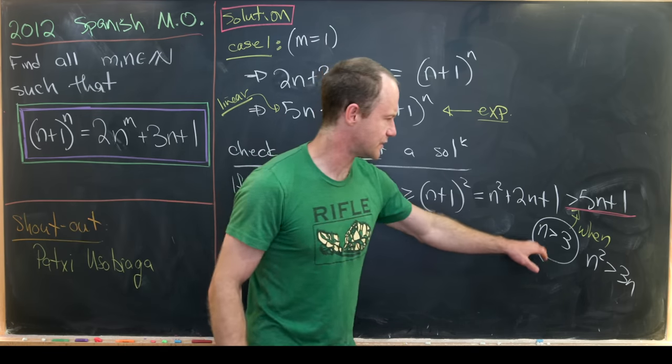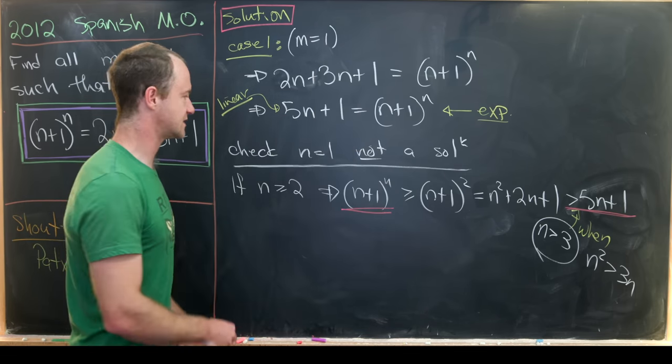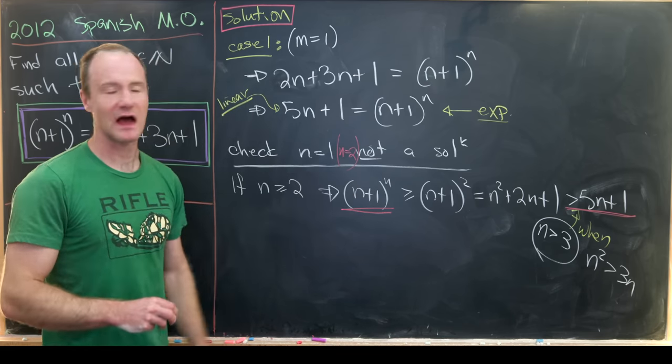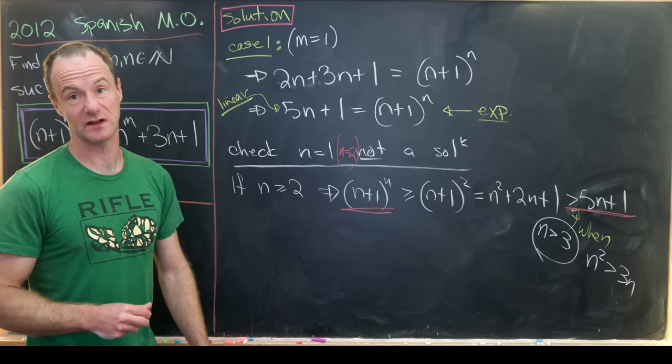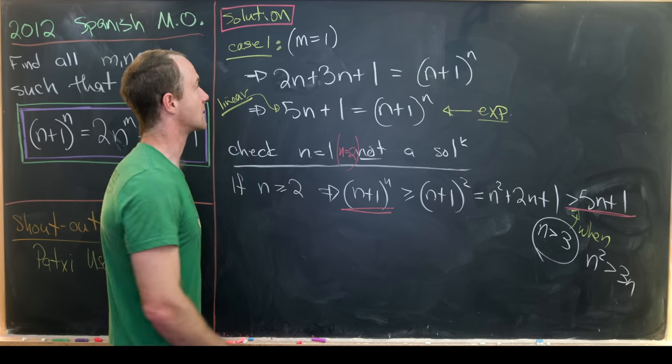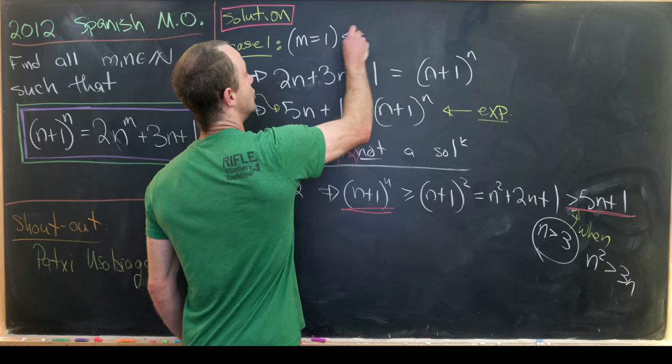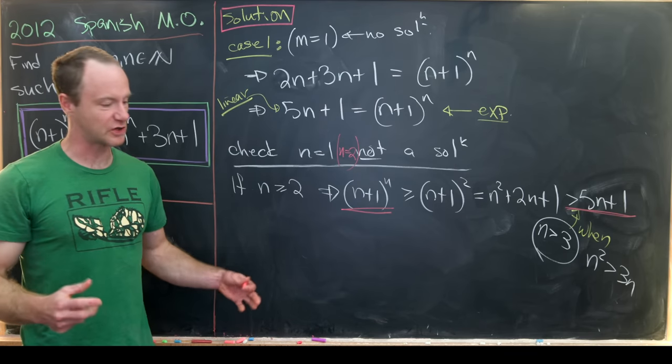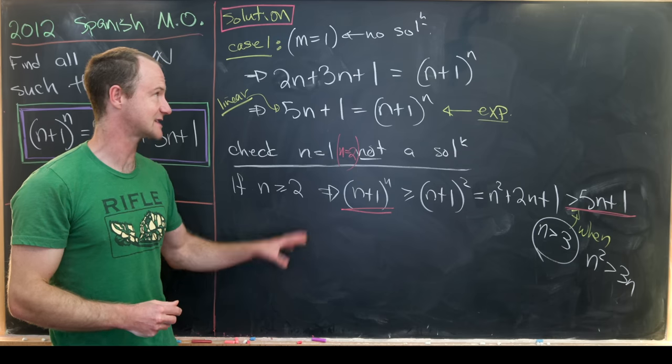But notice that that is only when n is bigger than 3, so that means we also have to check the case when n is equal to 2. But I'll let you guys do that. That should be a fairly easy computation. Okay, so all in all, what have we done so far? We've shown that there are no solutions in this case when m is equal to 1, which motivates us to move on to the next case,